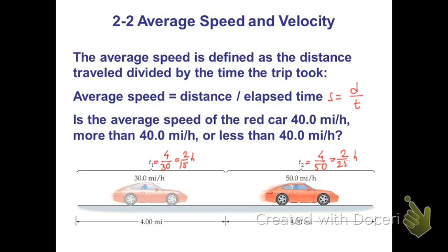So it is easy now to calculate total time. Total time is just the addition of these 2 times T1 plus T2. And the addition of these 2 numbers is 16 divided by 75 hours.